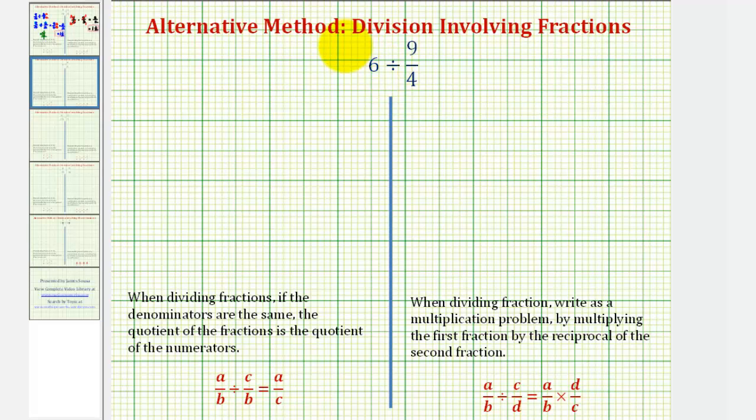Welcome to an example of a quotient involving a fraction. Here we have 6 divided by 9 fourths. So our goal is to determine how many 9 fourths there are in 6.